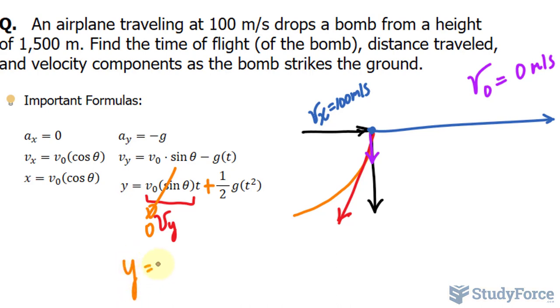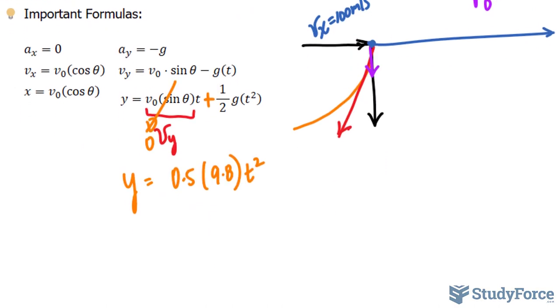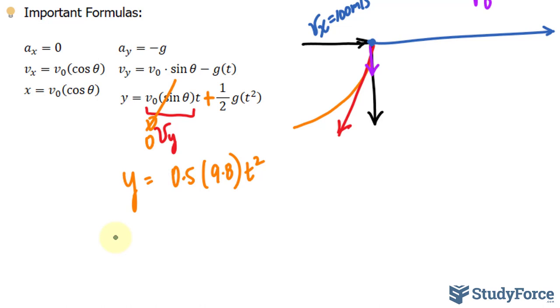So we have y = 0.5 times gravity, which is 9.8 meters per second squared, times t squared. The distance to the ground is 1,500. So I'll replace this y value with 1,500, and by solving for t we can actually find out the time it takes the bomb to reach the ground.